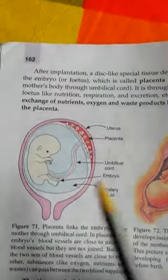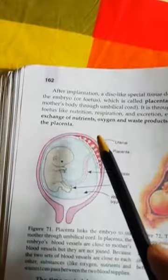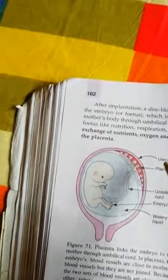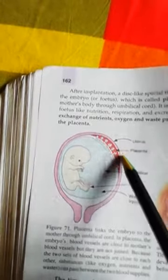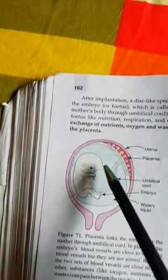Looking at another diagram, we can see the uterus where the embryo is attached after implantation. After the development of the embryo, a special tissue develops between the wall of the uterus and the embryo. This special tissue is called the placenta, shown as the red-colored structure in the diagram, which provides the connection between the embryo and the uterus.